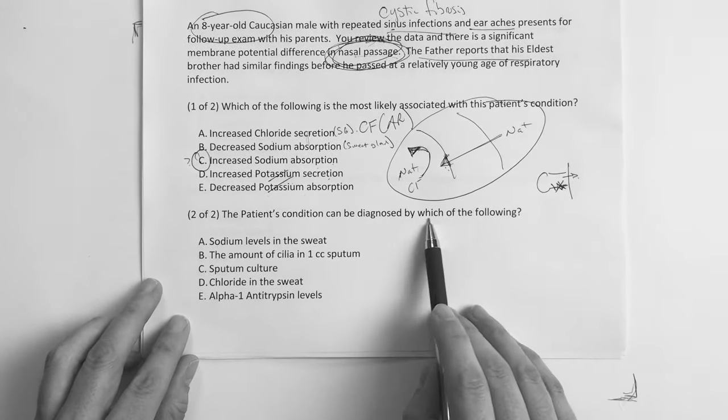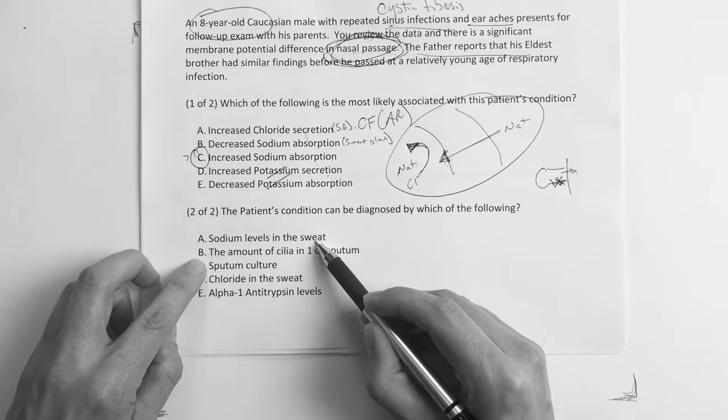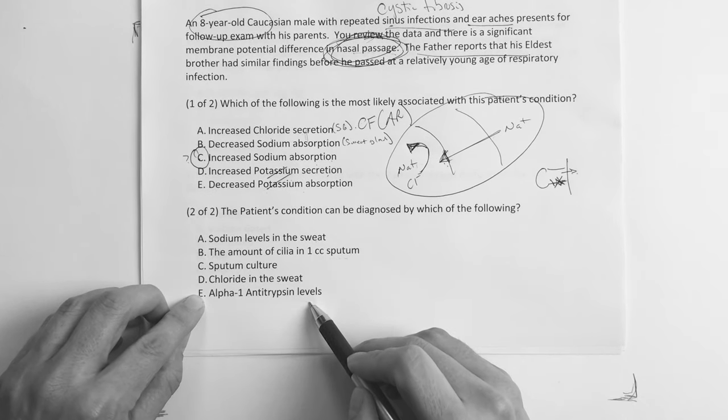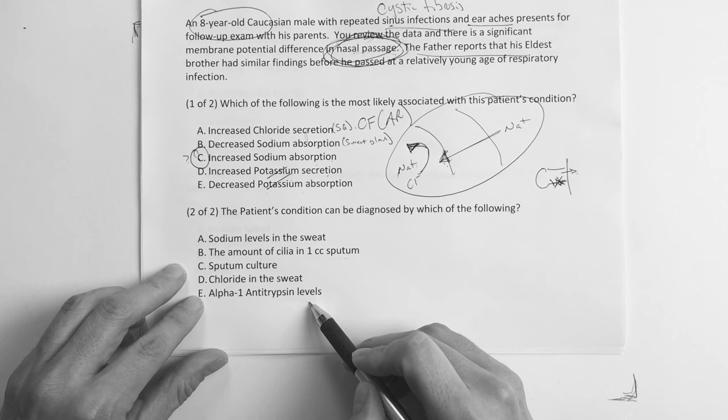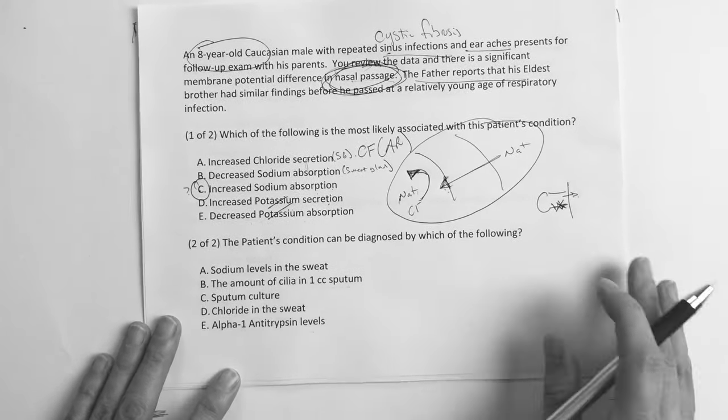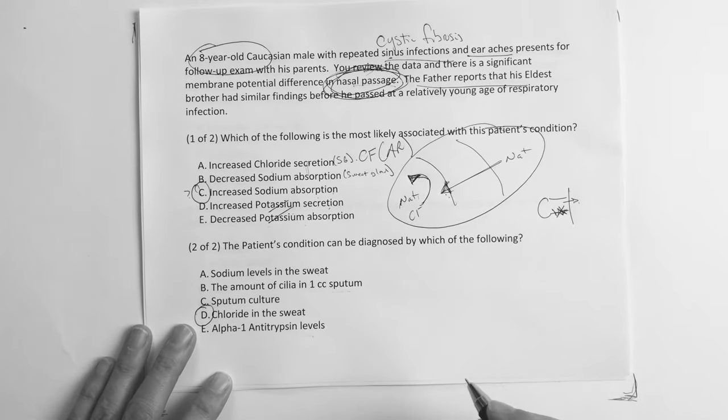Okay, so again you have to know the difference between where you're at when it comes to cystic fibrosis. The patient's condition can be diagnosed by which of the following? Sodium levels in the sweat, the amount of cilia in one cc of sputum, sputum culture, chloride in the sweat, alpha-1 antitrypsin level. Well, you know, with this one you just have to actually just know that it's going to be the, and most of y'all know that just like on that first scenario, it's going to be the chloride in the sweat.